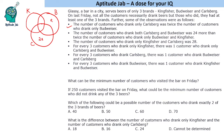The number of customers who drank both Karlsberg and Budweiser was 24 more than twice the number who drank only Budweiser and Kingfisher — a slightly complicated statement we will form an equation from. The number who drank only Kingfisher and Karlsberg was 28. For every three customers who drank only Kingfisher, there was one who drank only Karlsberg and Budweiser — so these are in ratio 3:1. We assign only Kingfisher as 3B and only Karlsberg-and-Budweiser as B.